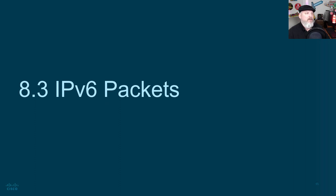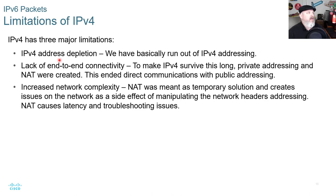V4 has some major limitations. Its addresses are depleted — we ran out of them a long time ago. There is a lack of end-to-end connectivity with V4, so to keep V4 viable, private addressing and network address translation, or NAT, was created. This ended direct communications with public addressing, since IP addressing is translated at the router. NAT was meant as a temporary solution but creates issues as a side effect of manipulating network header addressing, causing latency and troubleshooting problems.